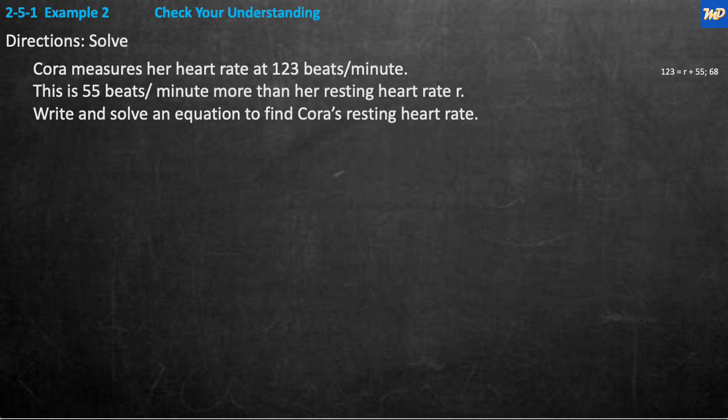Example two, check your understanding: Cora measures her heart rate at 123 beats per minute. This is 55 beats per minute more than her resting heart rate R. Write and solve an equation to find Cora's resting heart rate. This is exactly like the problem we just did — go ahead and stop the video, solve it on your own, and come back when you're ready.